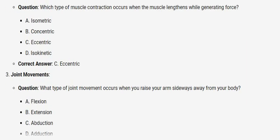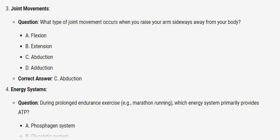Joint movements. Question: What type of joint movement occurs when you raise your arm sideways away from your body? A. Flexion. B. Extension. C. Abduction. D. Adduction. Correct answer: C. Abduction.